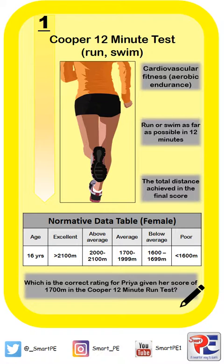Now, the specification talks about normative data tables. Normative data allows you to give your performance a rating, and there are five ratings in total: excellent, above average, average, below average, and poor.